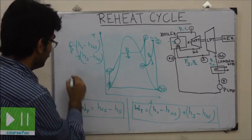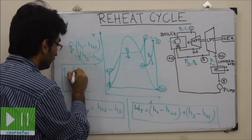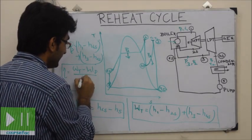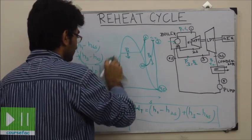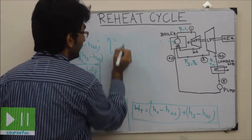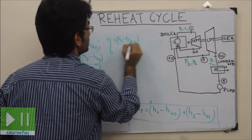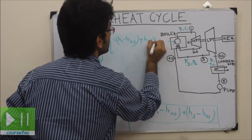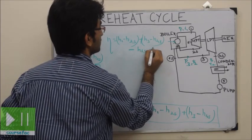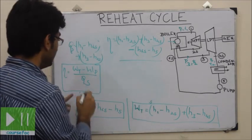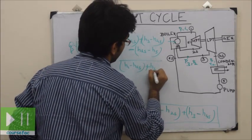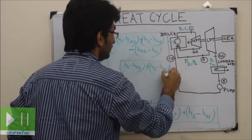The efficiency is equal to net work done divided by heat supply. Efficiency equals [(H1 − H2S) + (H3 − H4S) − (H6S − H5)] divided by [(H1 − H6S) + (H3 − H2S)]. This is the efficiency of the reheat cycle.